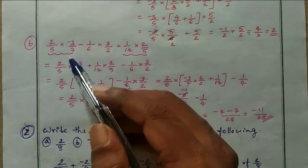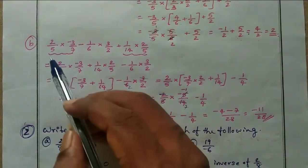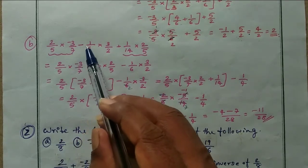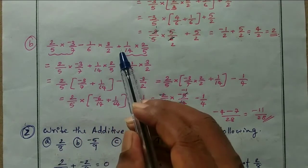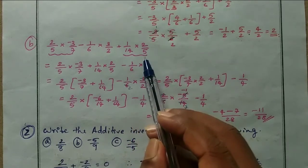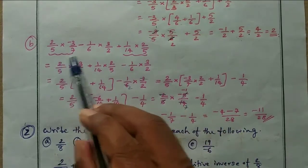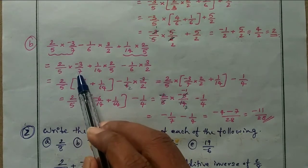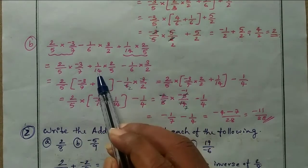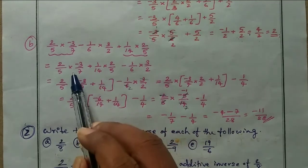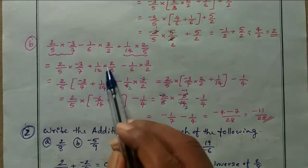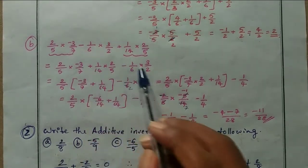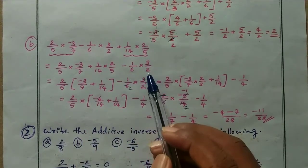Sub question (b): 2 by 5 into minus 3 by 7 minus 1 by 6 into 3 by 2 plus 1 by 14 into 2 by 5. Take the first and last terms: 2 by 5 into minus 3 by 7 plus 1 by 14 into 2 by 5. We can observe that 2 by 5 is the common factor.